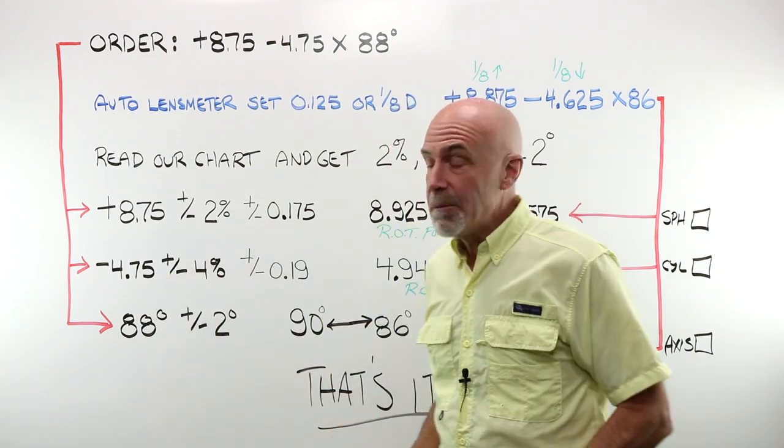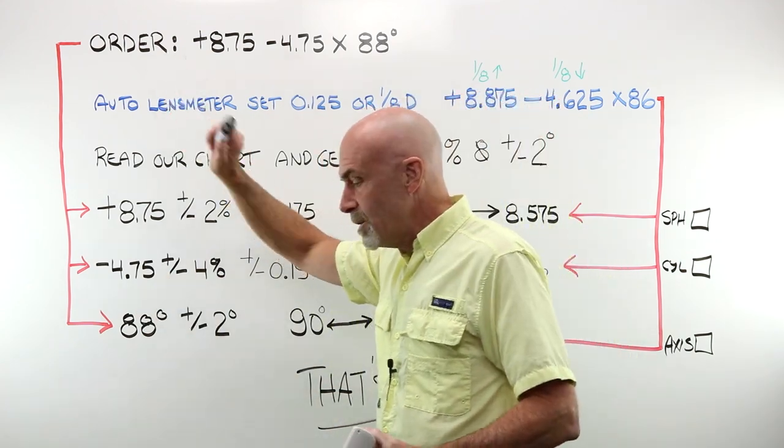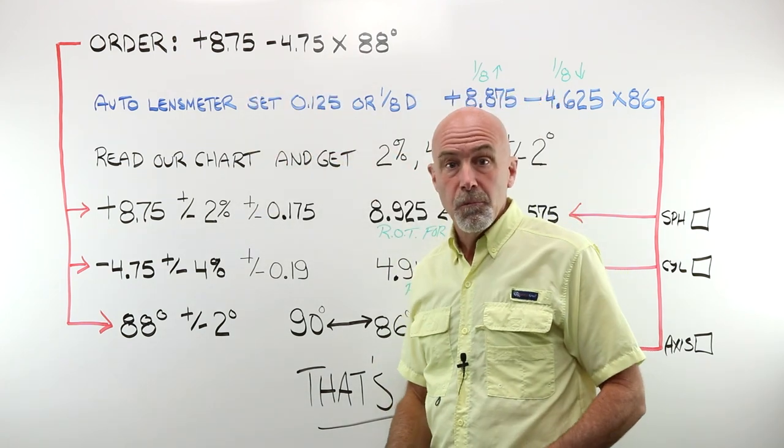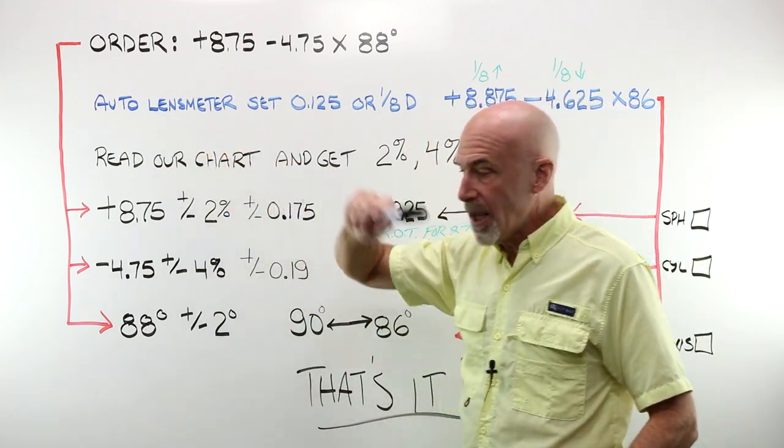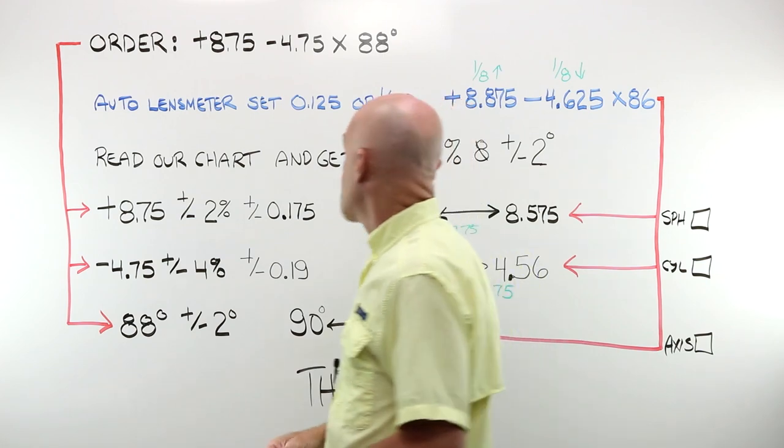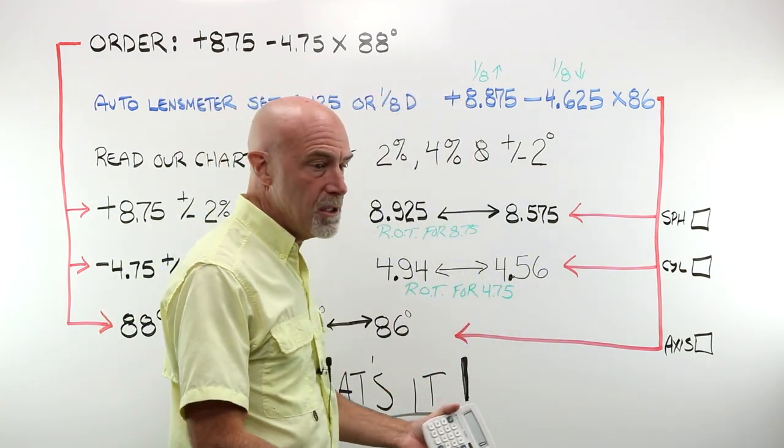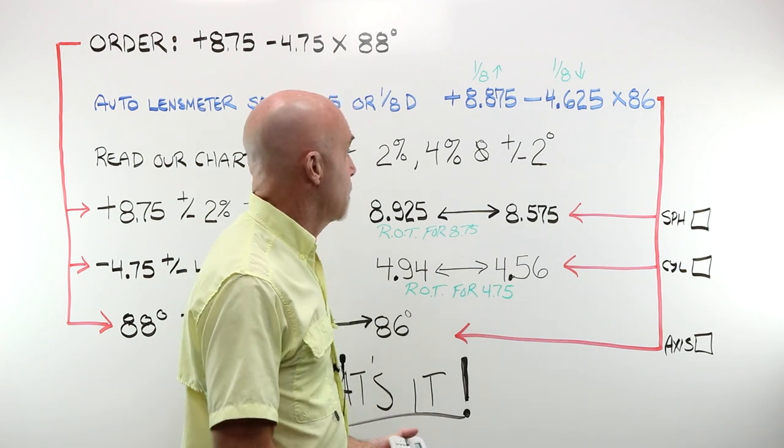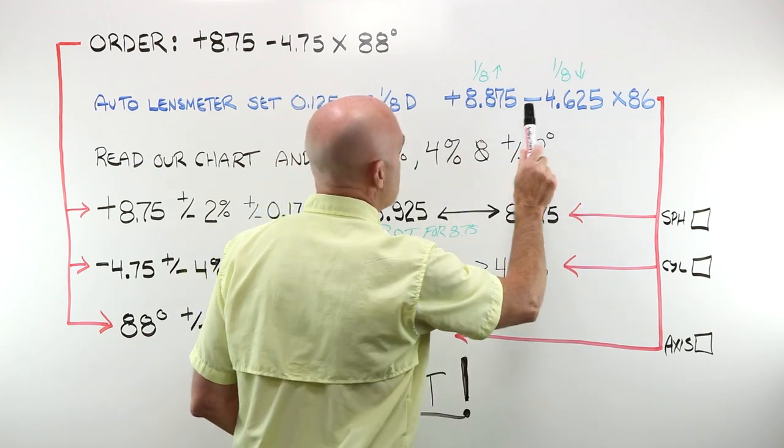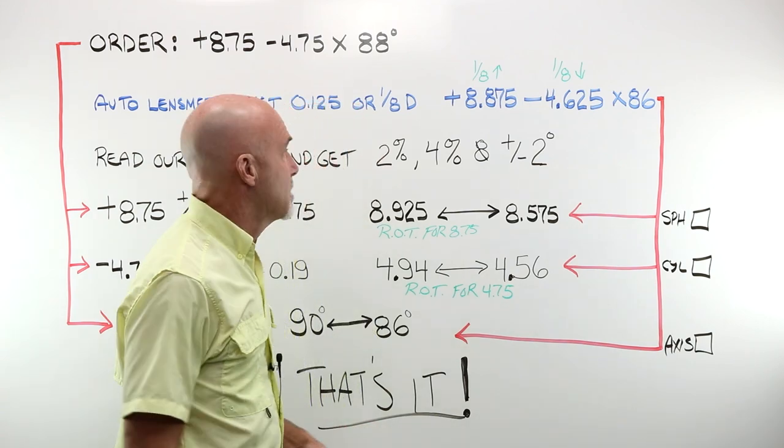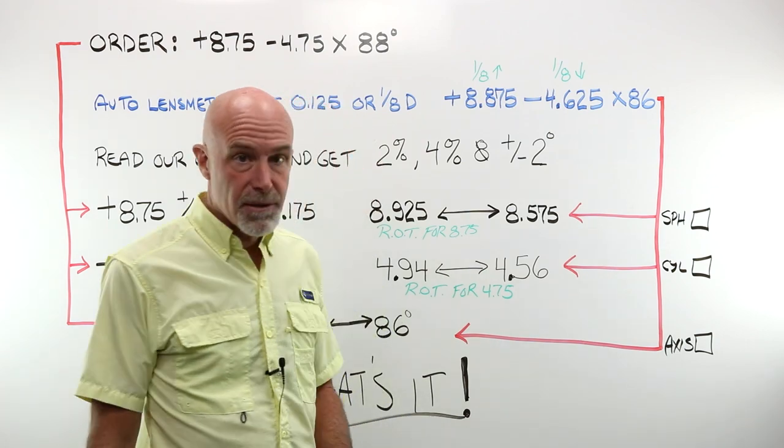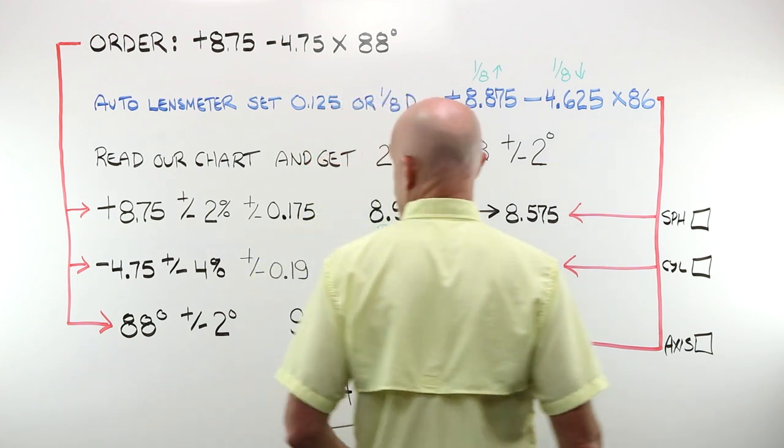All right, I'm going to run through two case examples. This is our first one. You ordered plus 875 minus 475 at 88. Where you work, you are extremely fortunate. You have a beautiful high-end auto lens meter set to read to the nearest 0.125 or eighth diopter step. You put the glasses into the auto lens meter, line up everything just like you should. You hit the print button and the ticket prints out and it says it's a plus 8.875 minus 4.625 at 86. It is one-eighth of a diopter strong in the sphere and one-eighth of a diopter weak in the cylinder. Not terribly unusual, actually.